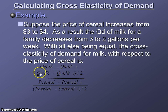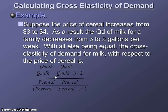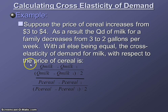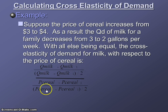Please note: in the denominator for quantity, that is supposed to be a plus sign — it's very hard to see, so make sure you don't think it's a typo. Also in the denominator for price, that is also a plus sign. So it's quantity minus quantity one of milk over quantity plus quantity one of milk divided by two — the average of the two quantities. And then price minus price one of cereal over price plus price one of cereal divided by two — the average of the two prices. When we plug in our numbers, it would be three minus two over three plus two divided by two in the numerator, and three minus four over three plus four divided by two in the denominator.